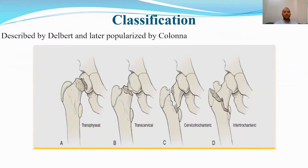For the classification of pediatric hip fractures, we use the Delbet classification. Type 1 is a transphyseal fracture, similar to Salter-Harris type 1. Type 2 is a transcervical fracture and is the most common fracture type. Type 3 is the cervicotrochanteric or basicervical fracture. Type 4 is the intertrochanteric or pertrochanteric fracture.